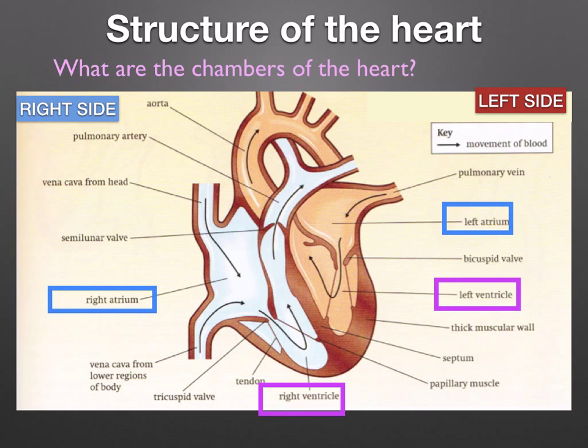The heart has different chambers: the atria and the ventricles. The atria, at the top, are thin-walled and elastic so they can expand when they collect blood. They only have to pump blood to the ventricles, so they don't need much muscle. The ventricles have a much thicker muscular wall because they have to pump blood a greater distance. Notice how much thicker the left ventricle is — it has to pump blood all the way around the body, so it needs to create high pressure to overcome resistance.